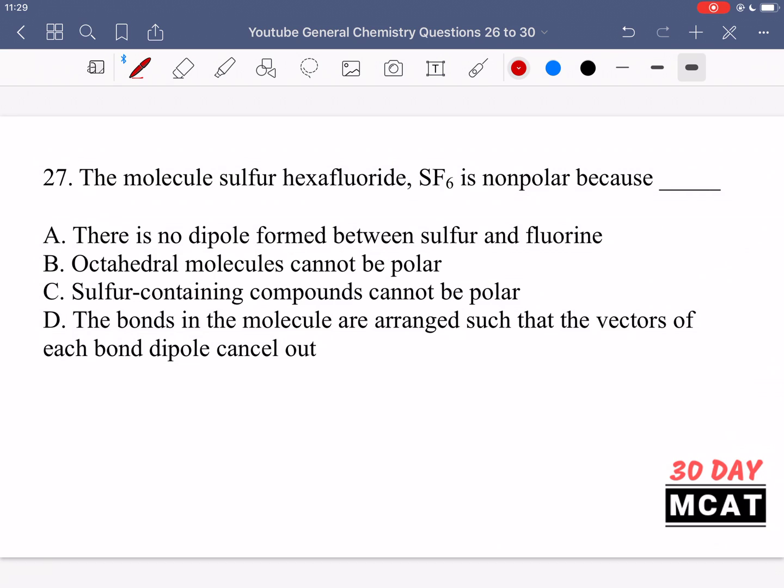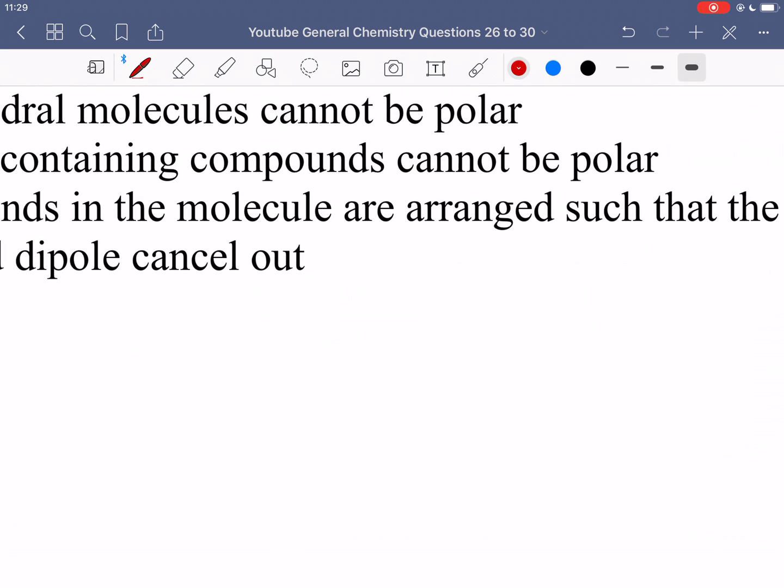In question 27 it says the molecule sulfur hexafluoride, with the chemical formula SF6, is nonpolar because what? So this molecule, why is it nonpolar? Well we see that there is a sulfur and fluoride bond, so you know there's a dipole that's present in this molecule, but overall it's not a polar molecule and that is because